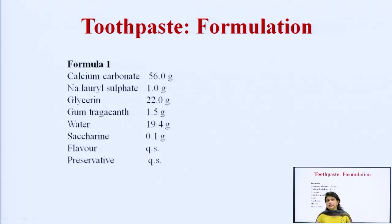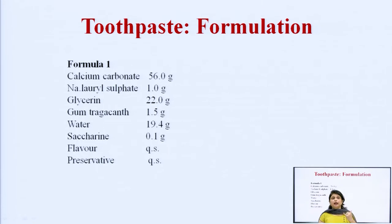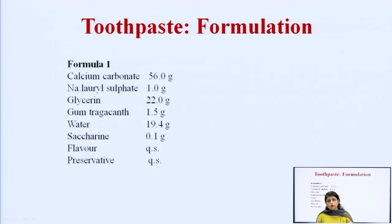In this formula, calcium carbonate is the abrasive agent. Sodium lauryl sulfate is a surfactant. Glycerine is a humectant. Gum tragacanth acts as a thickening agent. Saccharine is the sweetening agent. We also add a flavoring agent and a preservative. This is one formula which can be used to formulate toothpaste in the lab.